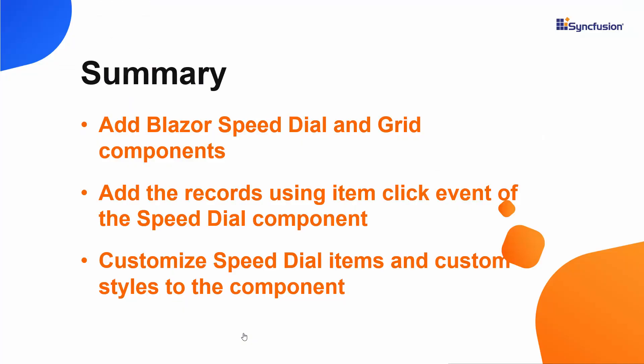In this video, you saw how to create a Blazor WebAssembly app using Visual Studio 2022 and add a Syncfusion Blazor SpeedDial component to it. You learned how to add new records to the data grid using the ItemClicked event, how to set an add icon to the button, and how to customize it using predefined CSS classes. Finally, you saw how to position the SpeedDial button component. If you would like to see the working code of this example, you can download it from the GitHub link in the description below.